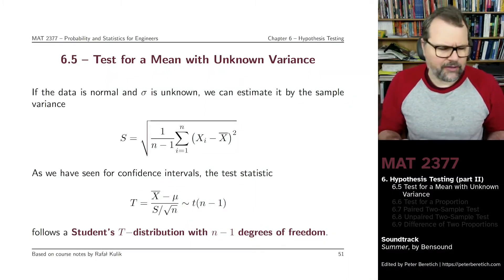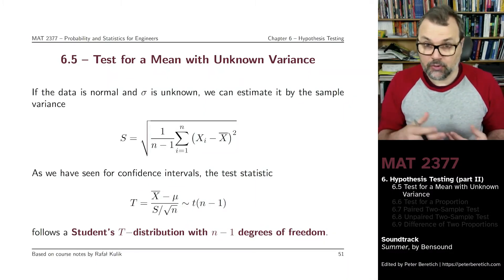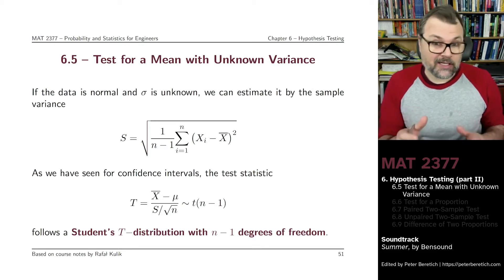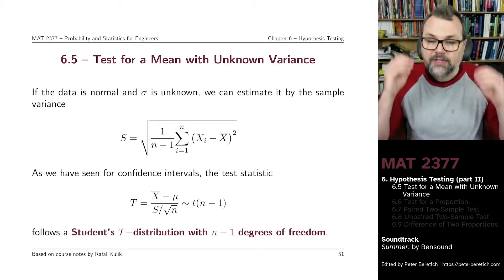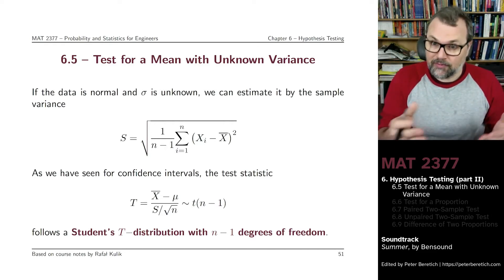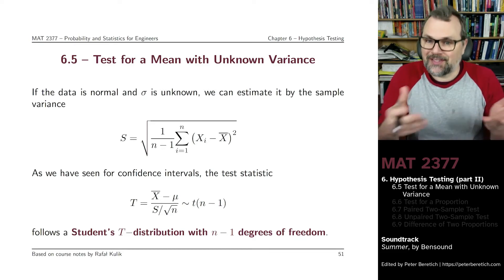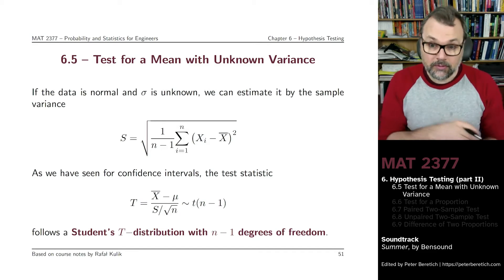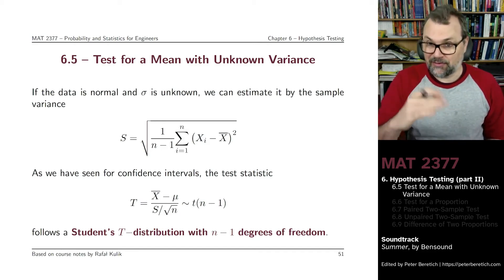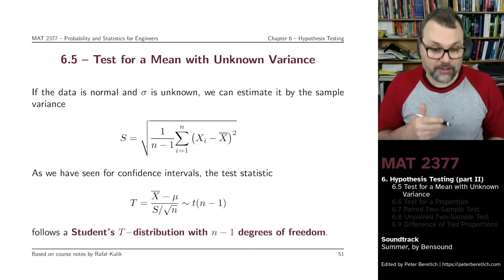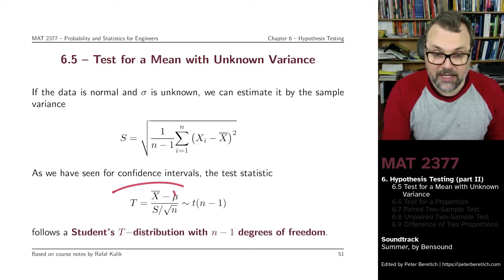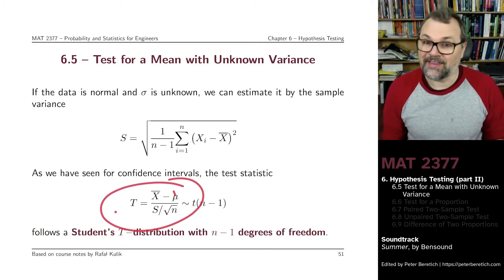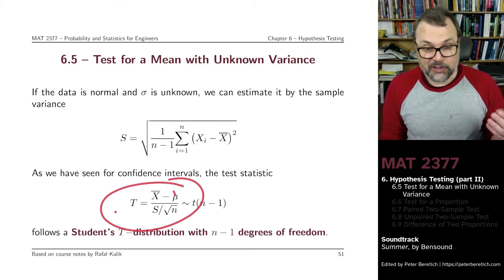What do we do if we don't know the variance of the underlying population whose mean we're trying to estimate? Well, it's a lot like what we did for confidence intervals. We first have to estimate the variance, and we do so with the sample variance. We estimate the standard deviation with the sample standard deviation, and then when we build the standardization — the sample mean minus the population mean divided by the sample standard deviation divided by the square root of the population size — this quantity will not follow a standard normal distribution. It will follow instead a Student's t-distribution with n minus one degrees of freedom.